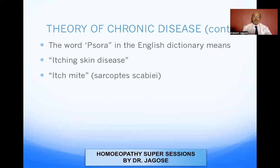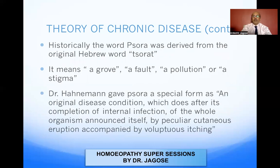Something about psora: the word psora in the English dictionary means an itching skin disease, or the itch mite — pathologically, it is Sarcoptes scabiei. Historically, the word psora was derived from the original Hebrew word 'sorah,' which means a groove, a fault, a pollution, or a stigma. That means whenever psora is affected, it will leave some residual effect in the body in the form of a groove, a fault, a pollution, or a stigma.